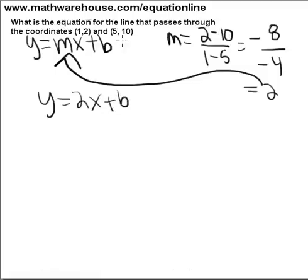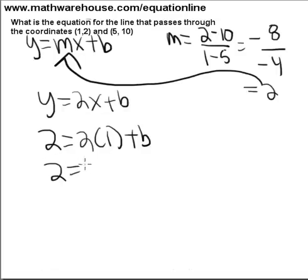And we can use either point to get our b. Let's use the nice small numbers 1 and 2. So, 2 equals 2 times 1 plus b.